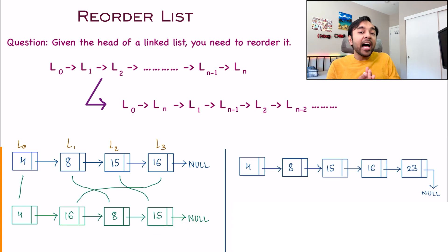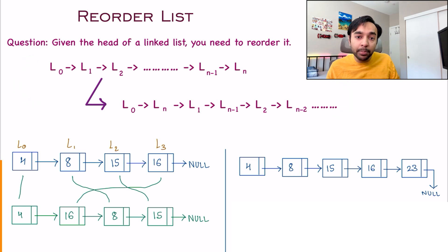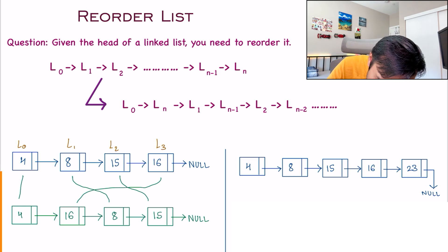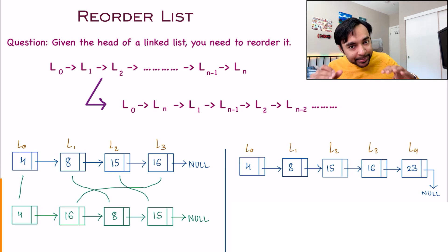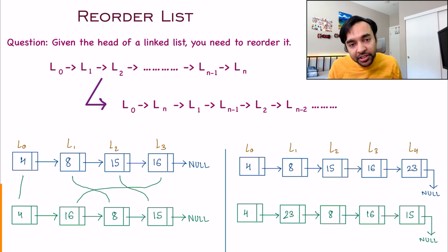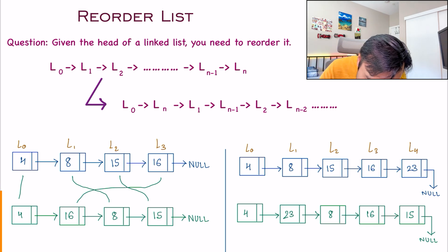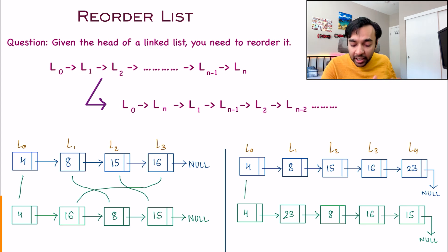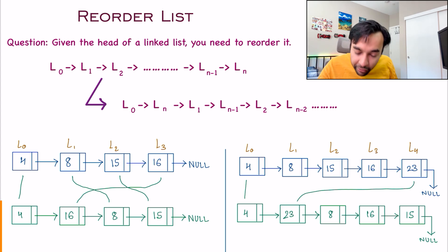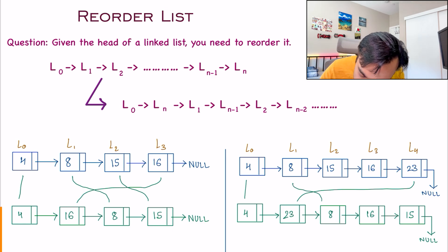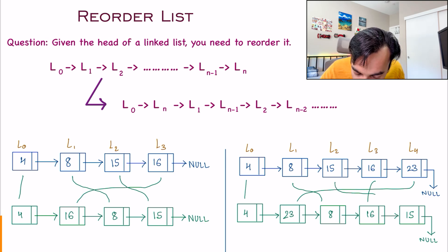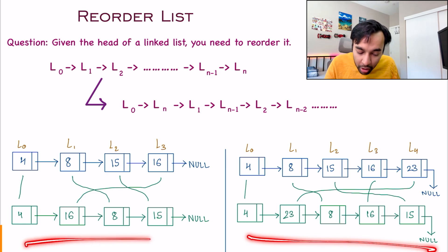In the second test case, I have an odd number of elements. You just have to follow this same principle to arrive at your answer. Once again, we label all of our elements. For this list, your reordered list will look something like this. First, I have the first element from the beginning, then the first element from the very last, then I pick up the second element and the second last. I am left with just one more element, so I place it and stop there. This is how your reordering takes place.